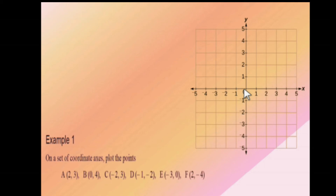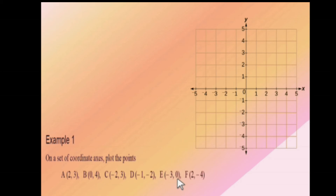Point C is (−2, 3). Go to −2 horizontally — 1, 2 — and then go up 3 vertically — 1, 2, 3. So this is your point C. Point D is (−1, −2). Go to origin, come to −1, then come down to −2. This is point D. Point E is (−3, 0). Go from origin to −3 — 1, 2, 3. Since Y is 0, you are not going vertically up or down, so point E is right at (−3, 0).